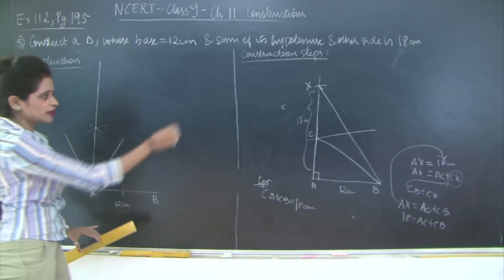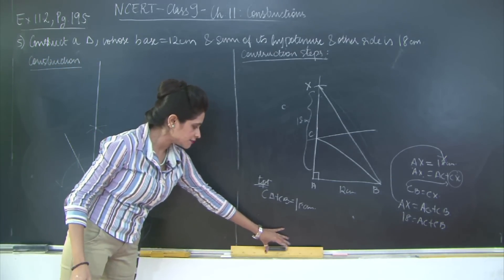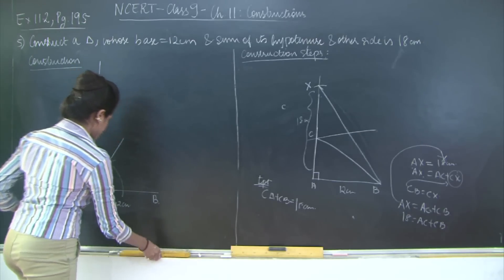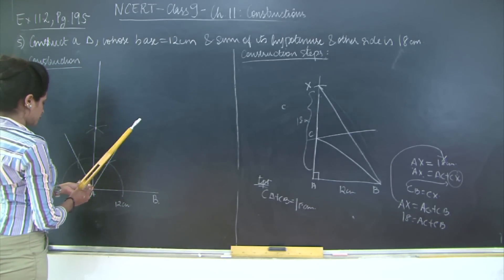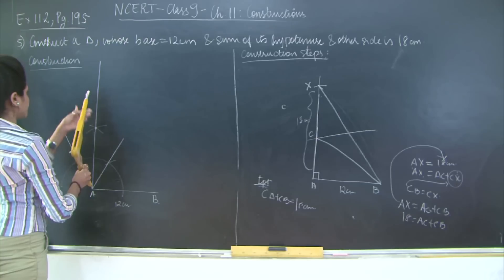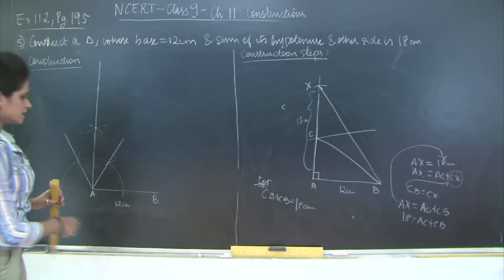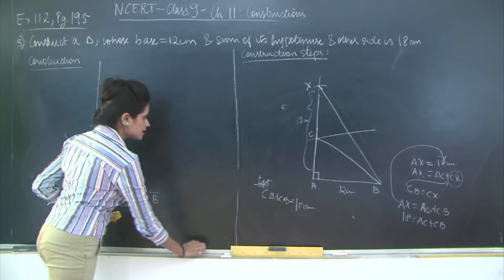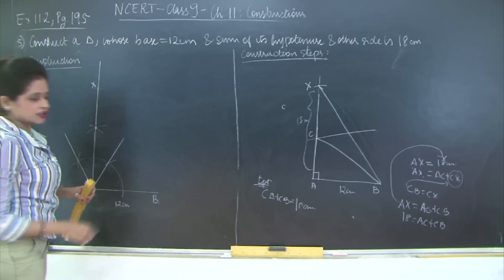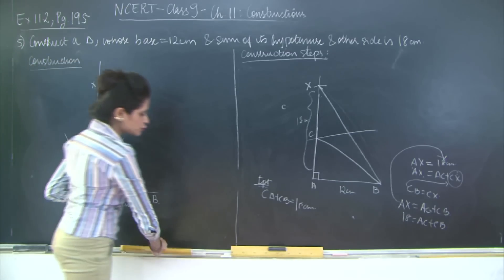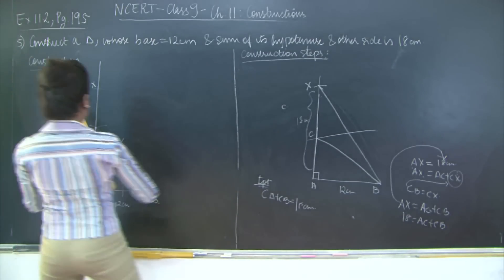Now we need to cut an arc equal to 18 centimeters on this ray from A. This length AX equals 18 centimeters. I will call it X according to the construction, and I'm going to join X to B.